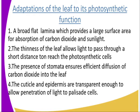We also have stomata on both the upper and lower parts of the leaf. The presence of stomata ensures efficient diffusion of carbon dioxide into the leaf. Remember, for photosynthesis to take place, carbon dioxide is very essential — it gets into the leaf through the stomata.